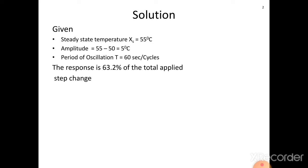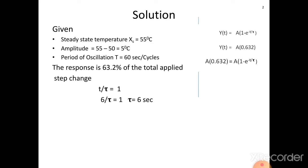The magnitude of the step change is 5 degrees centigrade. For a step change, Y(t) = A × (1 - e^(-t/τ)). Here Y(t) = A × 0.632, that is 63.2%. Using this formula, t/τ = 1. When t/τ = 1, t is given as 6 seconds. Therefore 6/τ = 1, so the time constant τ is calculated as 6 seconds.